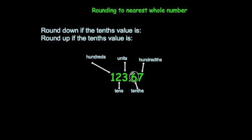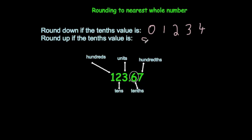Here we've got the number 123.67. The 1 stands for 100, so this is the hundreds column. The 2 stands for 20, so it's in the tens column. We've got 3 in the units column, then after the decimal point comes the tenths column — we've got 6 tenths — then the hundredths column, then the thousandths column, and so on. When rounding to the nearest whole number, you only need to look at the tenths column. If the tenths digit is 0, 1, 2, 3, or 4, you round down. If it is 5, 6, 7, 8, or 9, you round up to the next whole number.